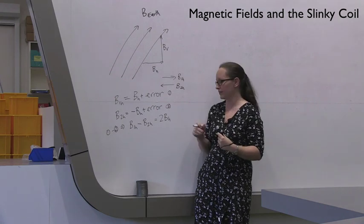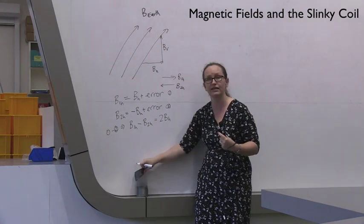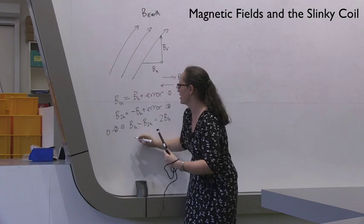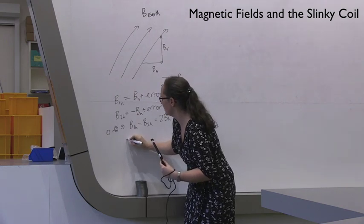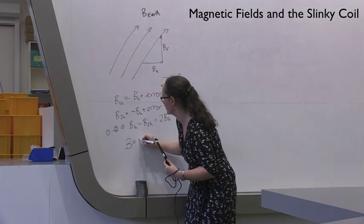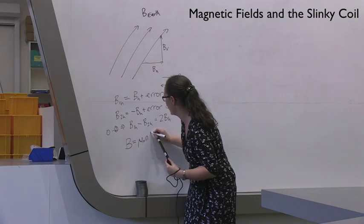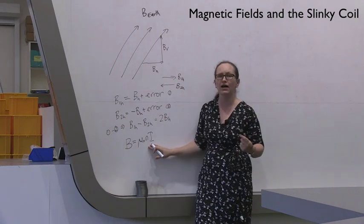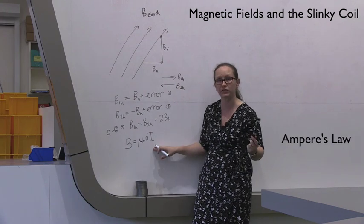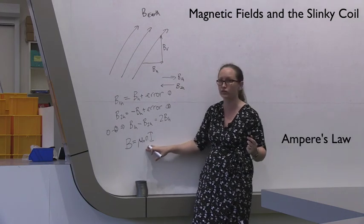In the second part of the experiment, you'll be using the slinky coil as your solenoid and you know that for solenoids, B, the magnetic field strength is given by mu naught Ni. You can derive this equation from Ampere's law, so make sure that you know how to derive it.